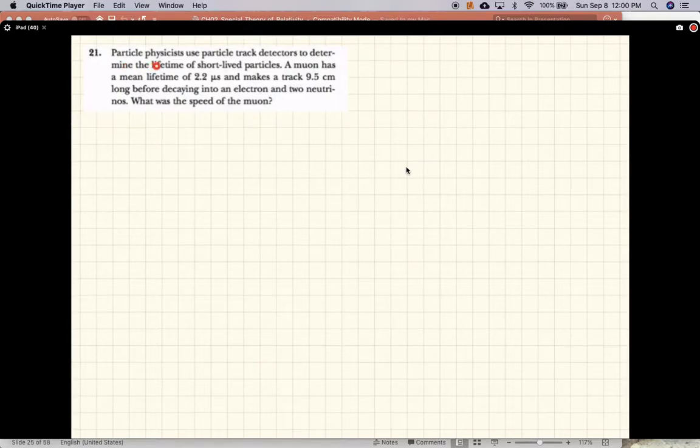This problem says particle physicists use particle track detectors to determine the lifetime of short-lived particles. This is sort of an inverse problem. A muon has a mean lifetime of 2.2 microseconds and makes a track 9.5 centimeters long before decaying into an electron and two neutrinos. What is the speed of the muon?